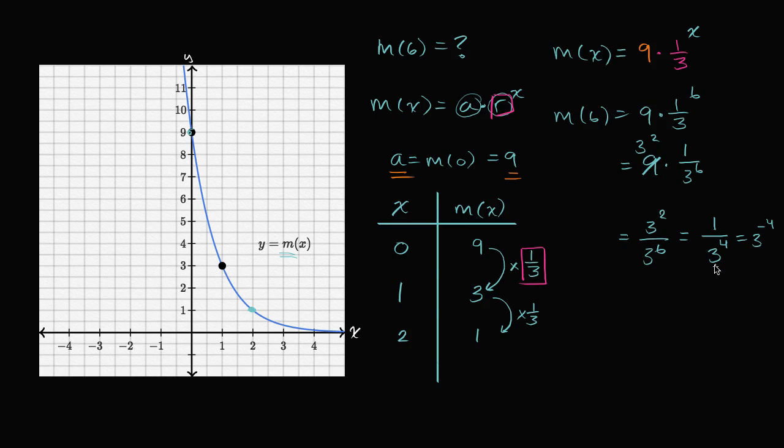So what's three to the fourth? So three squared is nine, three to the third is 27, three to the fourth is 81, so this is going to be equal to one over 81. M of six is equal to one over 81.